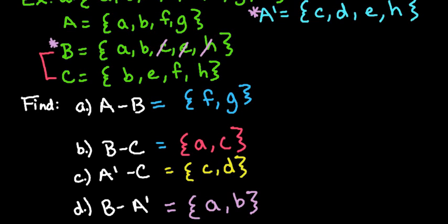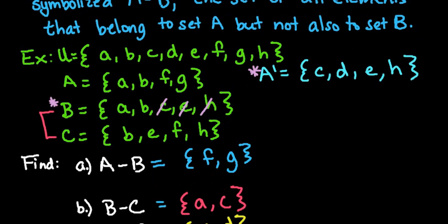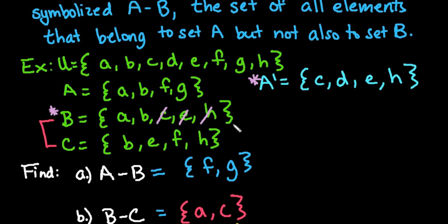So this process is very simple. Like I said, all you have to do is take out anything that the two sets you're comparing have in common, and whatever set is first, you're just going to write what is left in that set after you take out whatever they have in common.